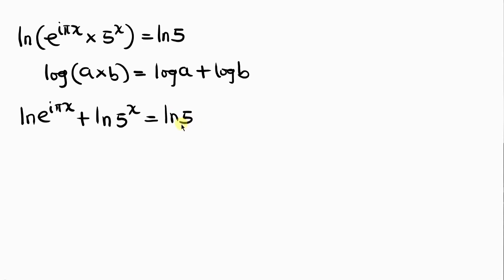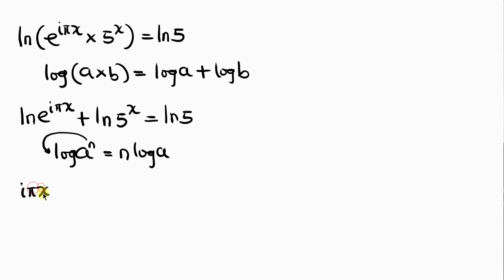Our next step is to apply the power rule of logarithm, which says that log of a to the n equals n times log a — we move the exponent to the front. So the exponent i pi x comes out front, multiplied by ln e, plus the exponent x comes out front, multiplied by ln 5, giving us i pi x times ln e, plus x times ln 5, equal to ln 5.